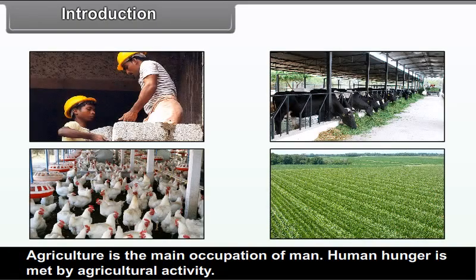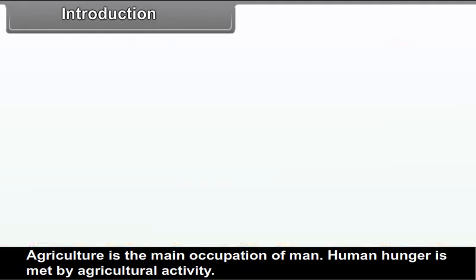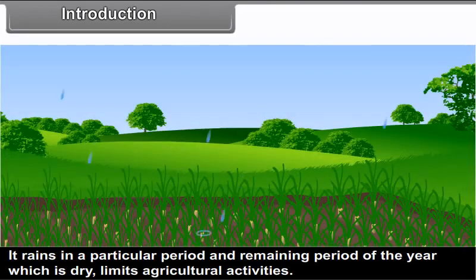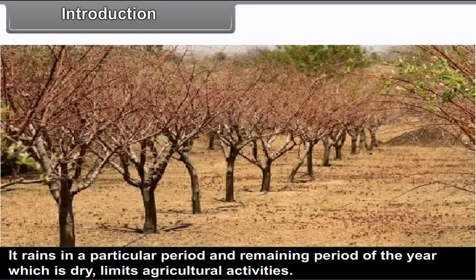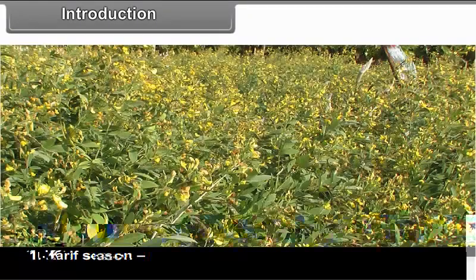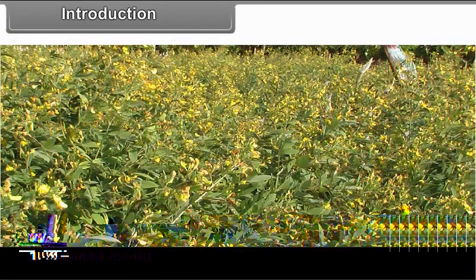Agriculture is the main occupation of man. Human hunger is met by agricultural activity. The climate of Maharashtra is of monsoon type. It rains in a particular period and the remaining period of the year, which is dry, limits agricultural activities. In Maharashtra, we have two different seasons of cultivation.